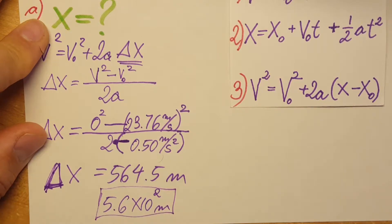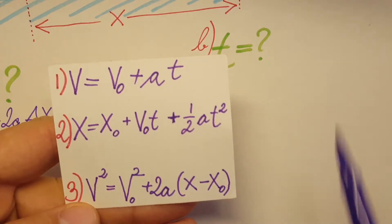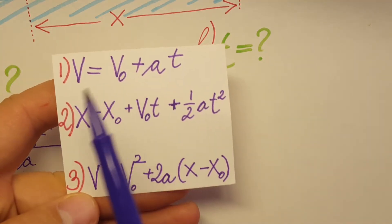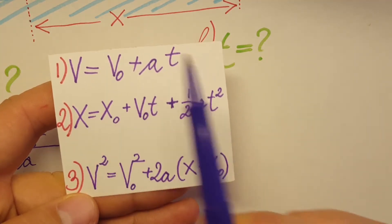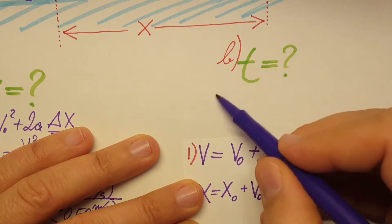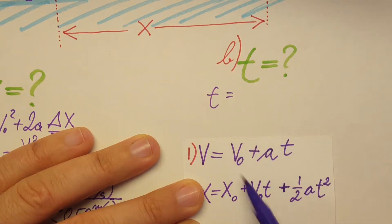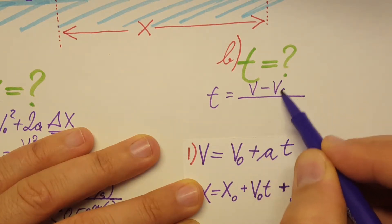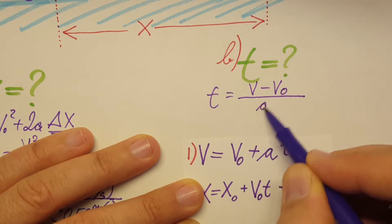Part A done. For part B, they're asking us the time. For this, we're gonna use formula number one. I'll solve for t directly: t equals v minus v₀ divided by the acceleration.